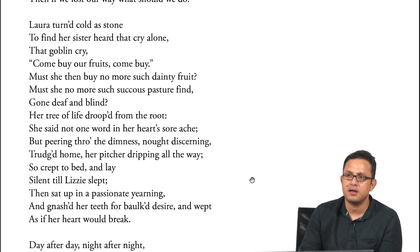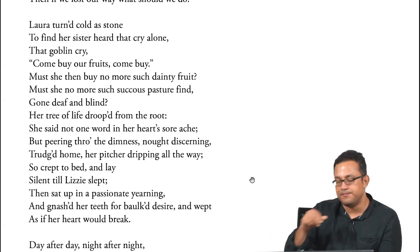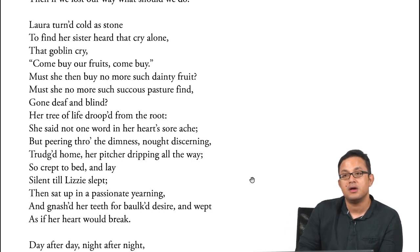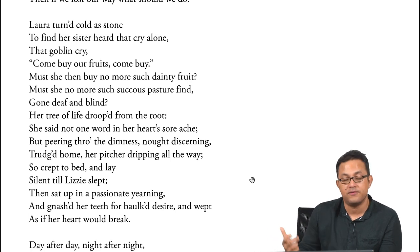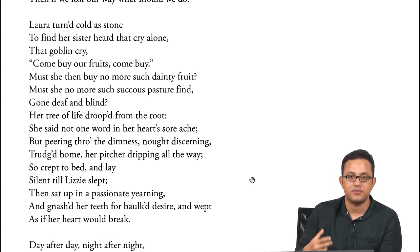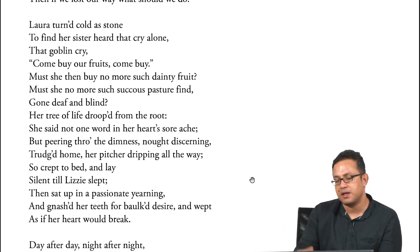Laura turned cold as stone to find her sister heard the goblin cry alone — 'Come buy our fruits, come buy.' Must she then buy no more such dainty fruit? 'Her tree of life drooped from the root. She said not one word in her heart's sore ache, but peering through the dimness, not discerning, trudged home, her pitcher dripping all the way.' The pitcher dripping all the way is symbolic — a life blood draining out of her. Trudging is a laborious walk; each step becomes heavier than the previous one, an act of labor — clear signs that Laura is beginning to show decadence and emptying out.